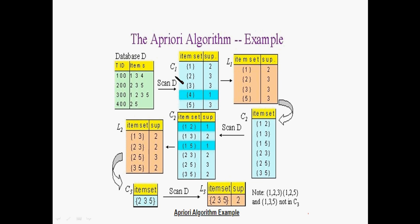We fix the minimum support in step 2. To satisfy the minimum support for the database, any item that does not satisfy is removed. Then we generate L1 — the frequent 1-item sets that meet minimum support. We join L1 with itself through the join operation to get candidates in C2: {1,2}, {1,3}, {1,5}, {2,3}, {2,5}, {3,5}. That gives us candidates in C2.